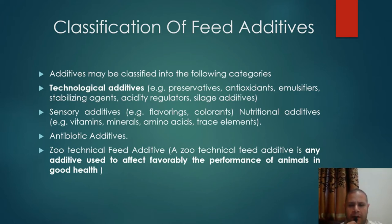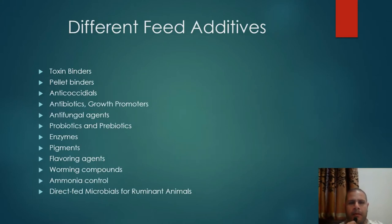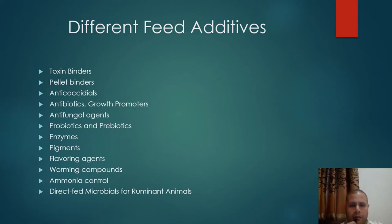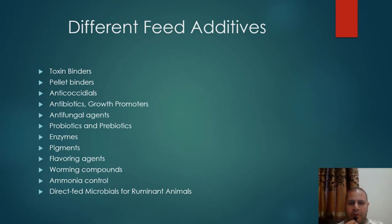A zootechnical feed additive is any additive used to affect favorably the performance of animals in good health. We will now discuss the following feed additives: toxin binders, pellet binders, anticoccidials, antibiotics, growth promoters, antifungal agents, probiotics and prebiotics, enzymes, pigments, flavoring agents, worming compounds, ammonia controlling compounds, and direct fed microbials for ruminant animals.